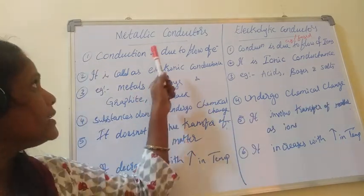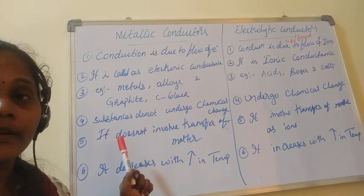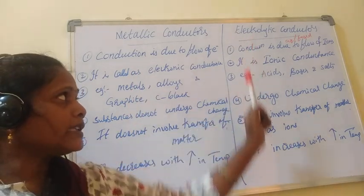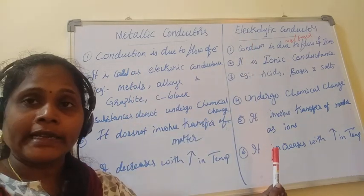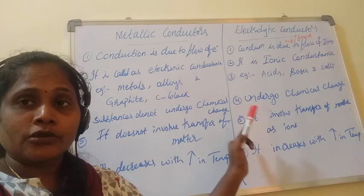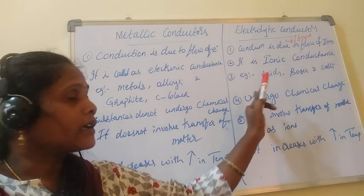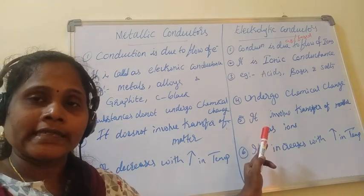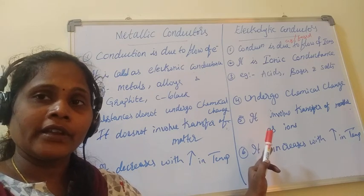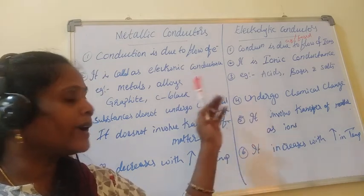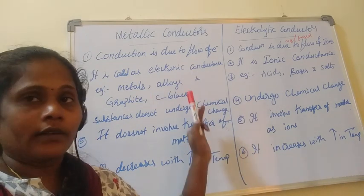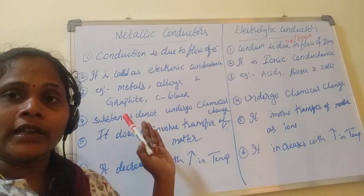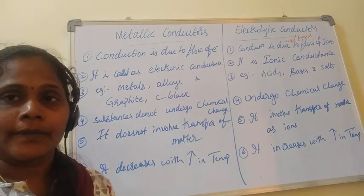Very importantly: metallic conductance decreases with increasing temperature, whereas electrolytic conductance increases with increasing temperature. Please make a note of this. In this chapter, whenever we discuss, if you have any doubt, you can come back and look at what electrolytic conductors or metallic conductors are.